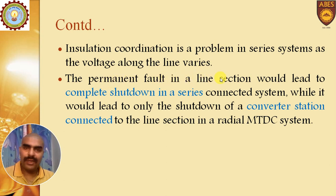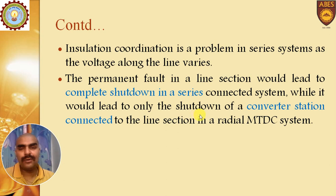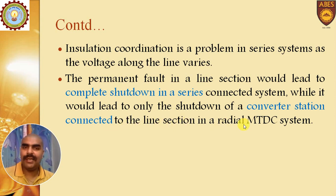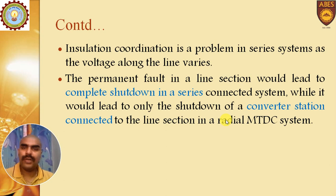A permanent fault in a line section would lead to complete shutdown in a series system, because all lines are connected in series. In contrast, in a parallel MTDC system, it would lead only to the shutdown of the converter station connected to the faulted line section in a radial MTDC system. So in series, all lines will be affected through that particular fault.